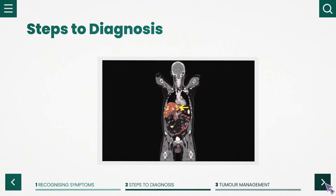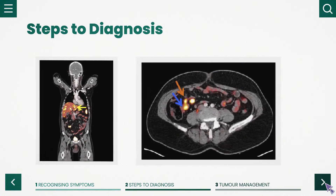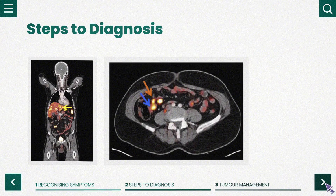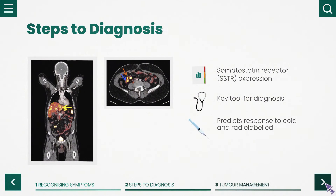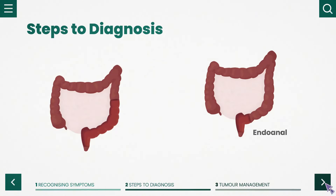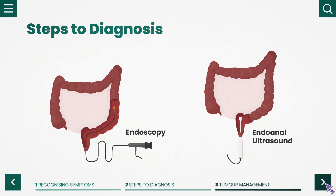Cross-sectional imaging is mandatory before functional imaging. Functional imaging using gallium-68 PET CT scans provides information about somatostatin receptor SSTR expression and is a key tool for diagnosis, prediction of response to cold and radio-labelled somatostatin analogues, as well as estimation of prognosis. Endoanal ultrasound and endoscopy are the gold standard of diagnosis, especially in rectal NETs.